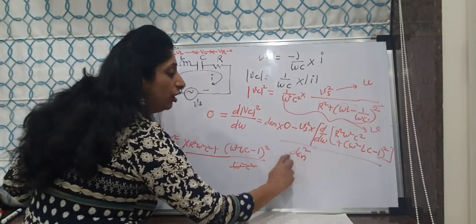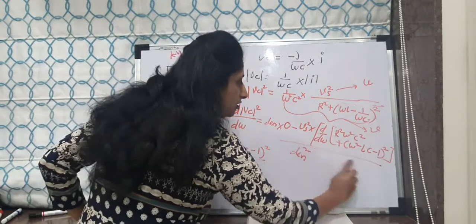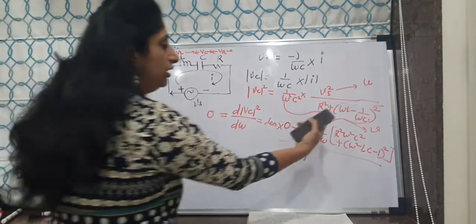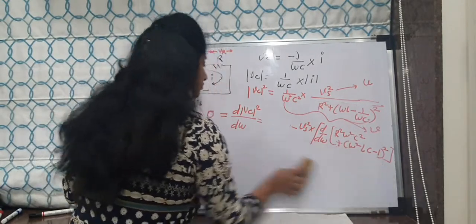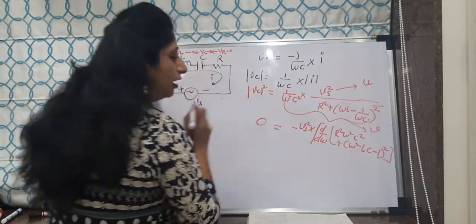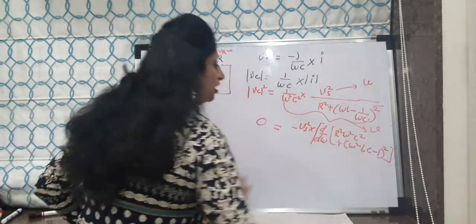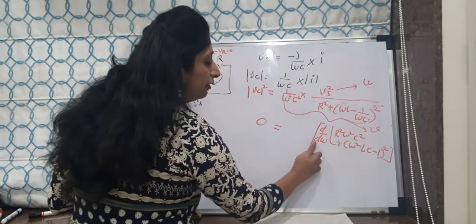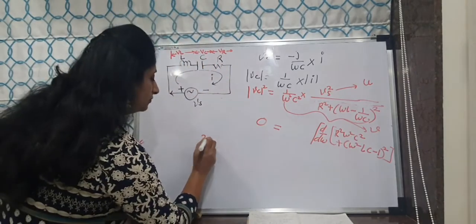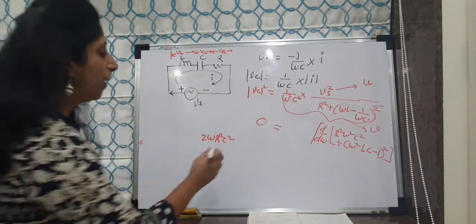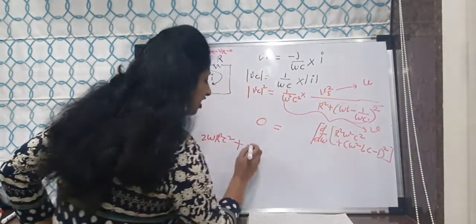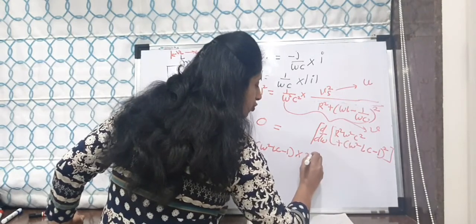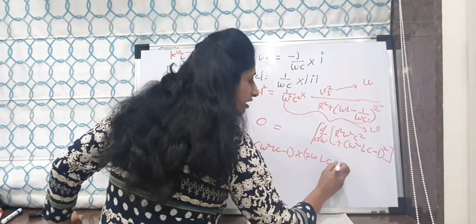Differentiating the denominator R²ω²C² + (ω²LC − 1)² with respect to ω gives 2ωR²C² + 2(ω²LC − 1)·2ωLC = 0. The ω terms cancel, leaving: 2R²C² + 4LC(ω²LC − 1) = 0, which simplifies to −2CR² = 4(ω²LC − 1).